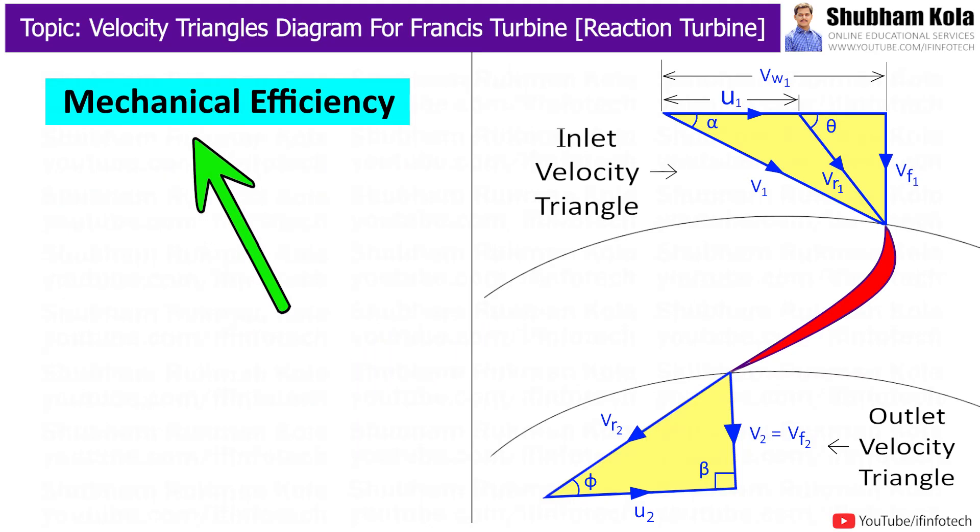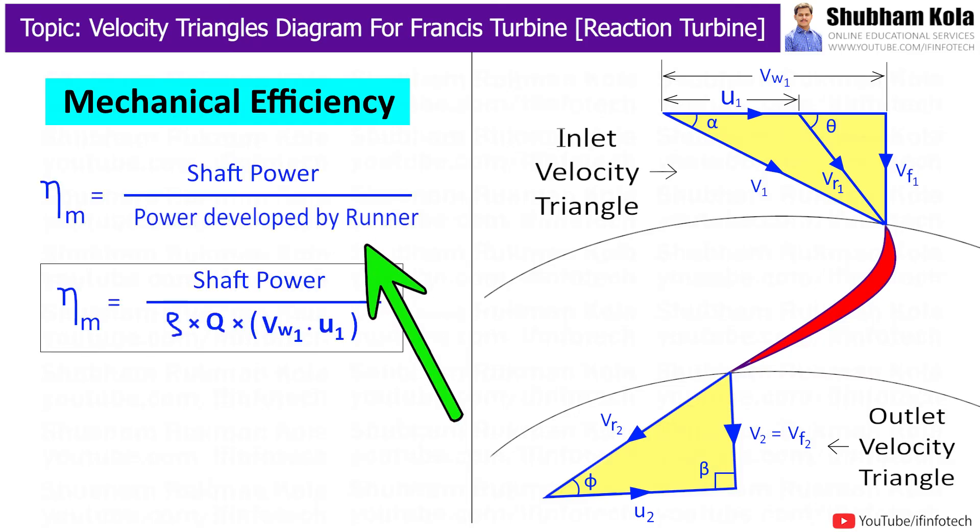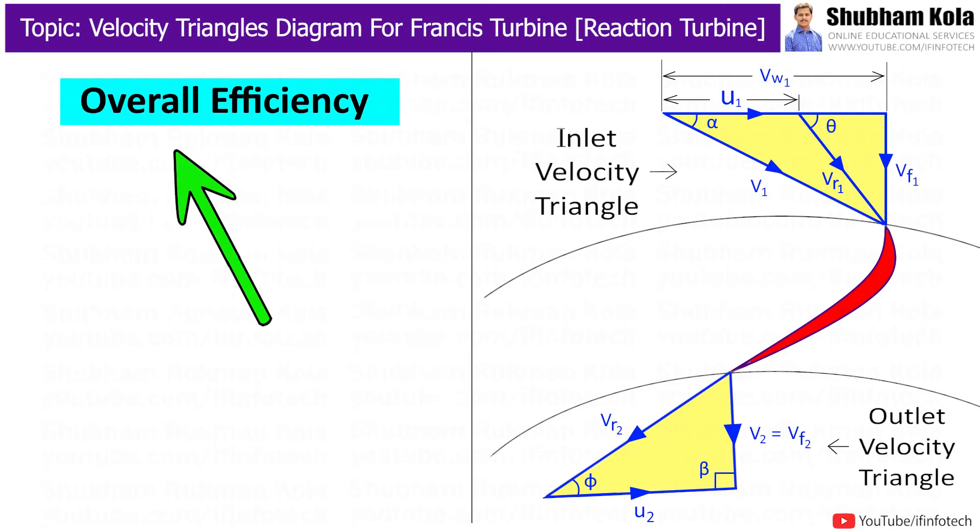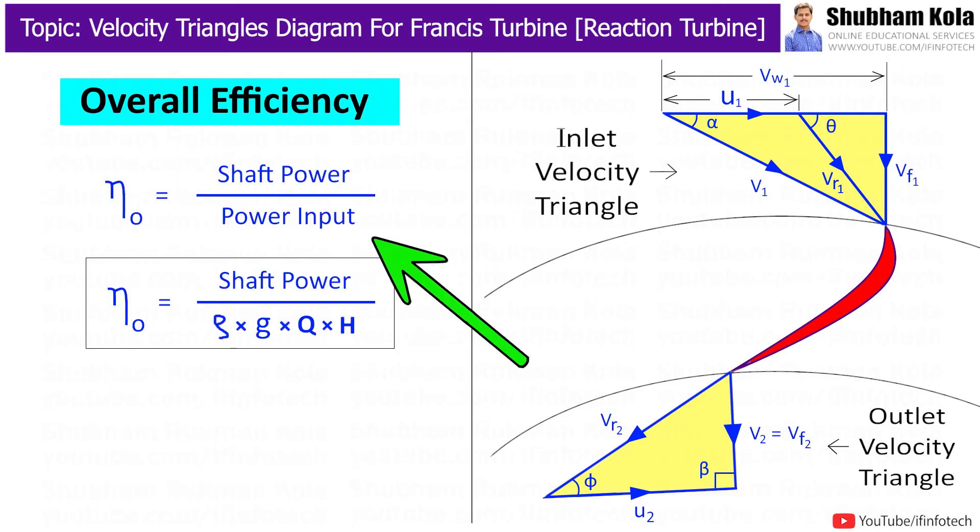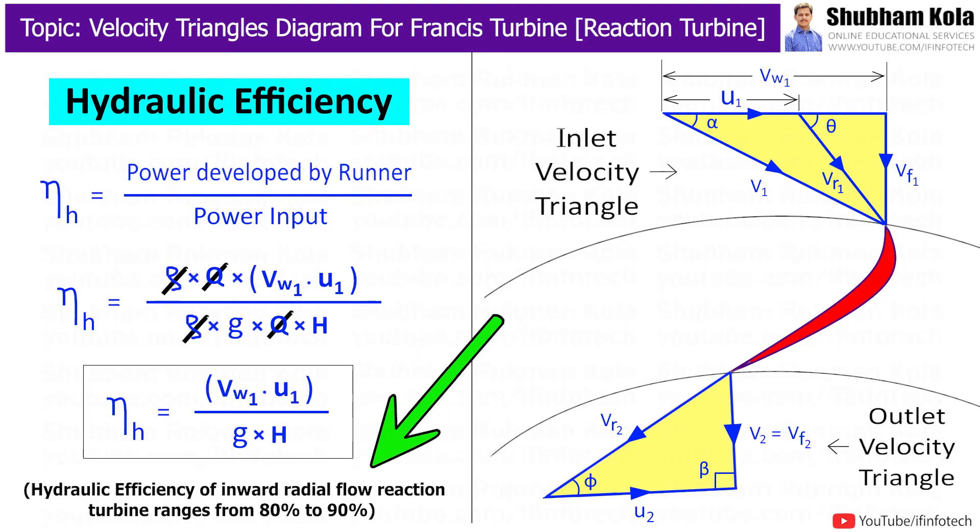And mechanical efficiency of turbine is given by shaft power divided by power developed by runner. And overall efficiency of turbine is given by shaft power divided by input power i.e. rho g q H. And it will also equal to hydraulic efficiency multiplied by mechanical efficiency. Hydraulic efficiency of inward radial flow reaction turbine ranges from 80 to 90%.